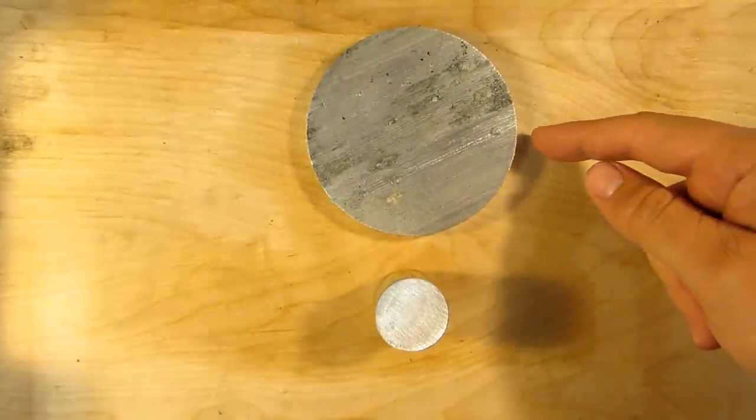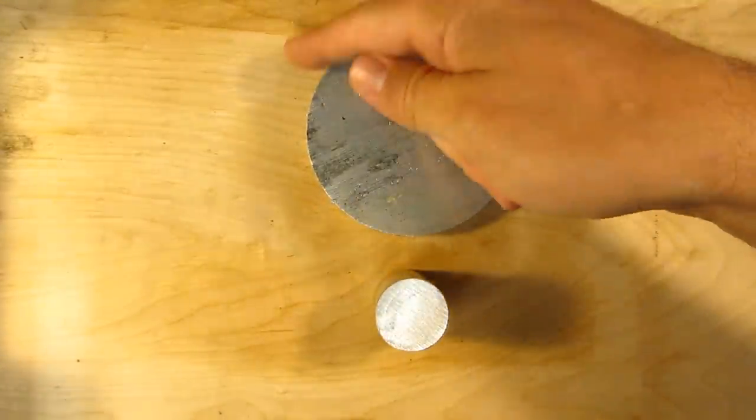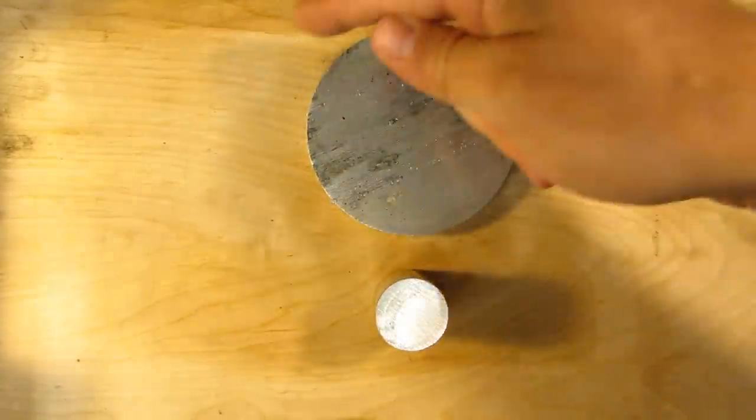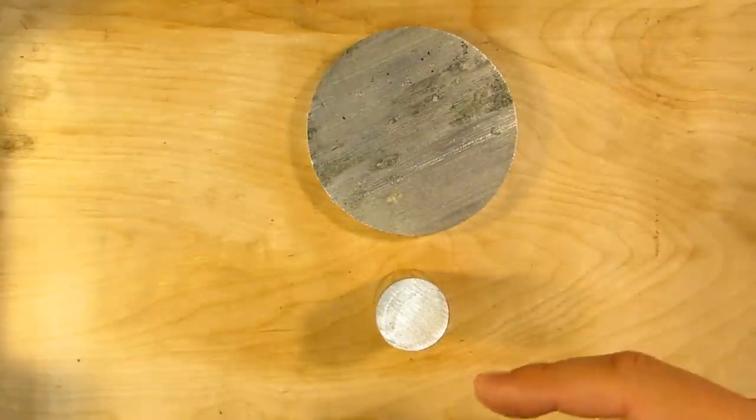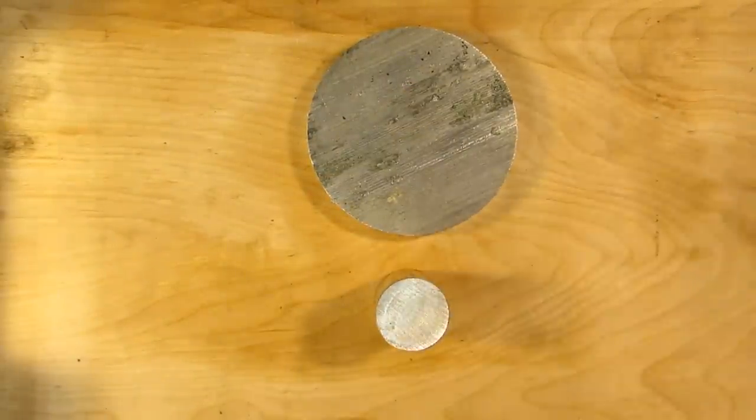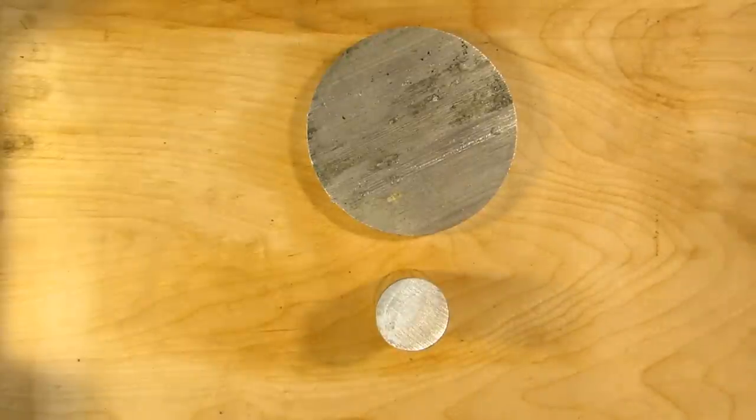On the lathe it would be how many feet of circumference of the material is moving past your cutter in one minute, or on the mill it would be how many feet of cutter is moving past your material.